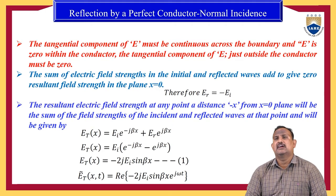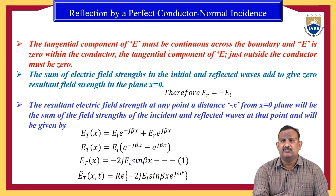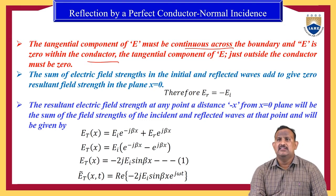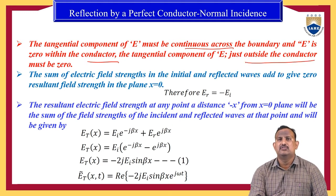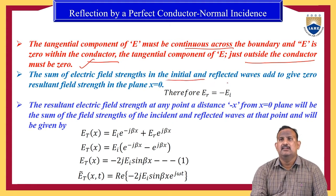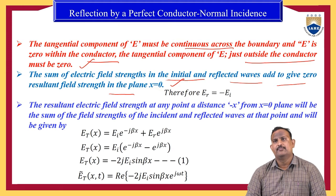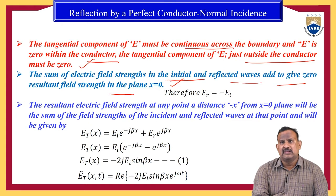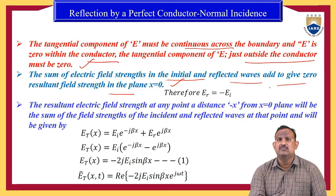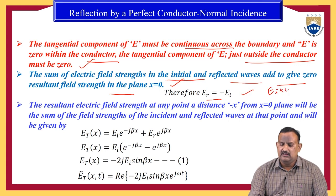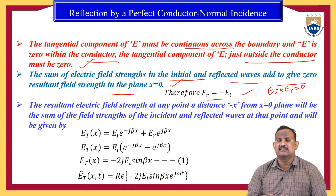According to the electrical boundary conditions, the tangential component of E must be continuous across the boundary. Since E is 0 within a conductor, the tangential component of E just outside the conductor must also be 0. Therefore, the sum of electric field strengths in the incident and reflected waves must add to give a 0 resultant field strength in the plane x = 0.